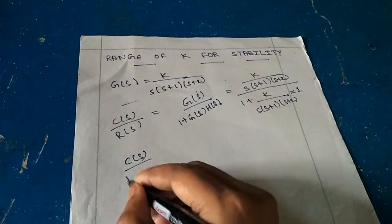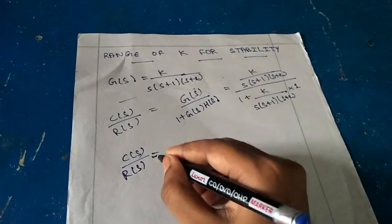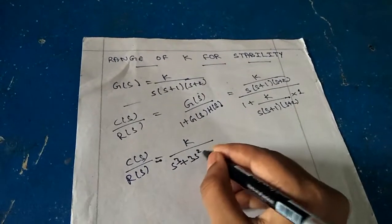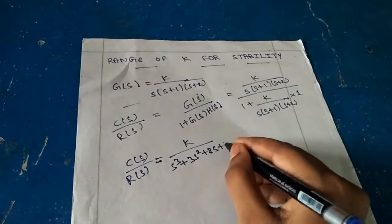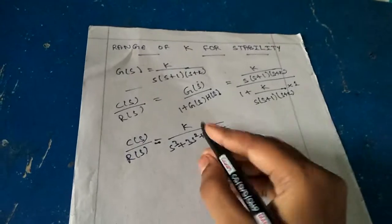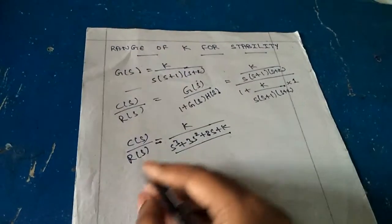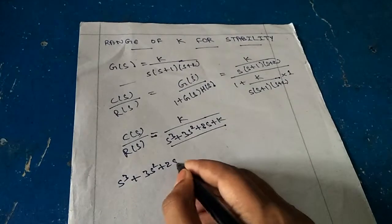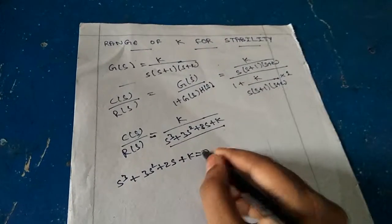If we simplify this, we get C(s)/R(s) equals k divided by s³ + 3s² + 2s + k. Now consider this characteristic equation: s³ + 3s² + 2s + k = 0.